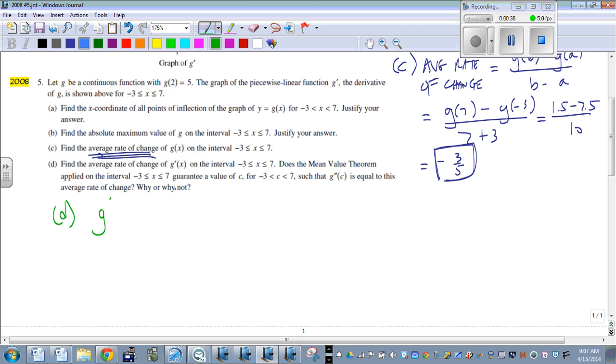So we're going to do derivative of G of 7 minus derivative of G of negative 3 all over 7 minus negative 3, which is 7 plus 3.